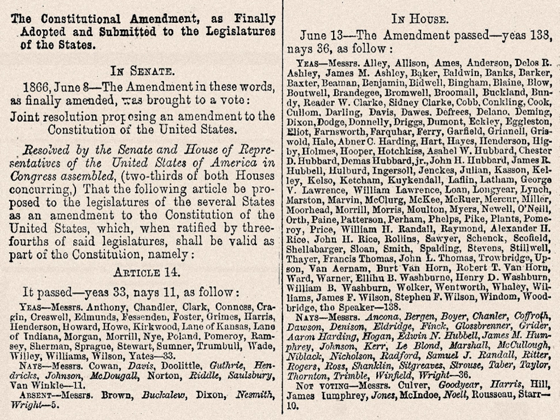Since the Slaughterhouse Cases, the Privileges or Immunities Clause has been interpreted to do very little. The Due Process Clause prohibits state and local government officials from depriving persons of life, liberty, or property without legislative authorization. This clause has also been used by the Federal Judiciary to make most of the Bill of Rights applicable to the states, as well as to recognize substantive and procedural requirements that state laws must satisfy. The Equal Protection Clause requires each state to provide equal protection under the law to all people, including all non-citizens, within its jurisdiction. The Second, Third, and Fourth Sections of the Amendment are seldom litigated.